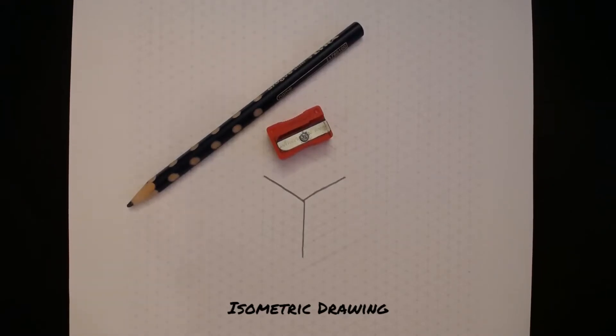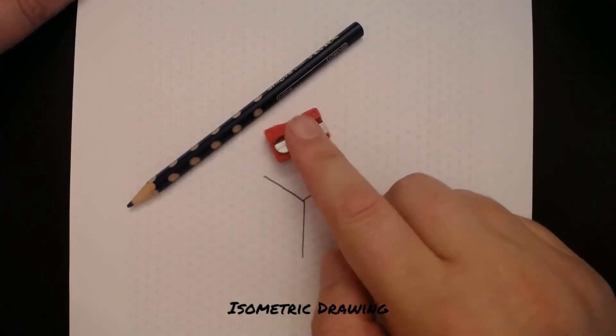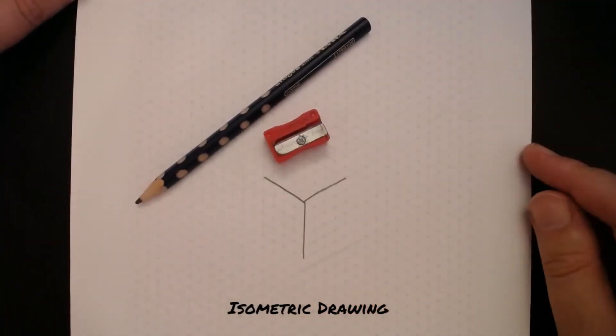Hello and welcome to this video on isometric drawing. We're probably going to recap some skills you already knew, but hopefully we'll be starting on some new skills and improving your drawing over the course of this video. You're going to need some isometric paper, a pencil sharpener, and a nice pencil to draw with.